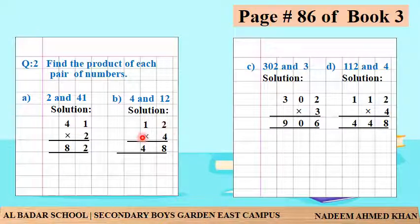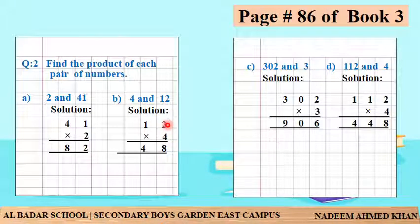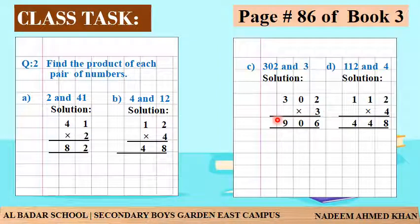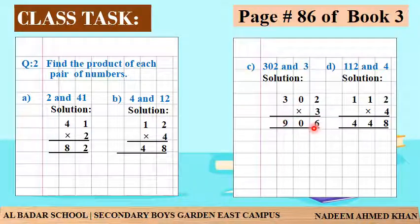For 4 and 12: write 12, then multiply by 4, then draw the line. Using the 4 times table: 4 multiplied by 2 is equal to 8, 4 multiplied by 1 is equal to 4 - so 48. The product of 4 and 12 is 48.